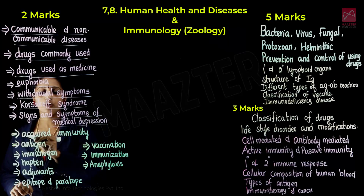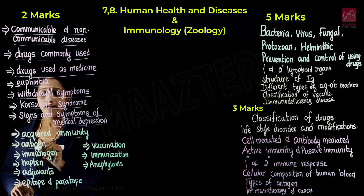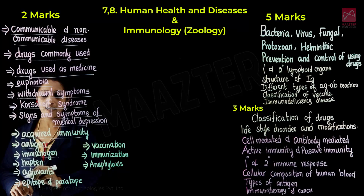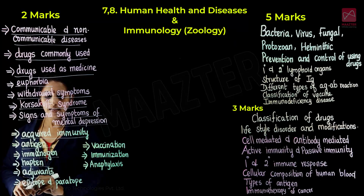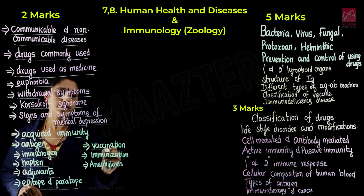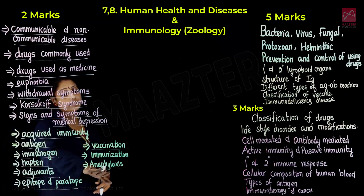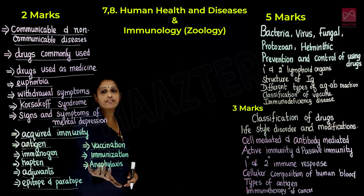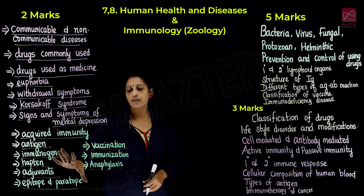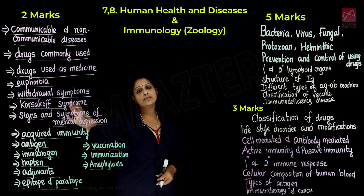Now we will talk about immunology. Key terms include acquired immunity, antigen, immunogen, hapten, adjuvants, epitope and paratope, vaccination, immunization, and anaphylaxis. You will find important questions in this immunology section.